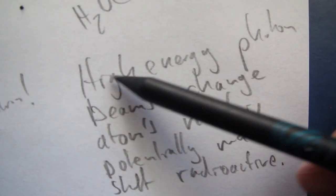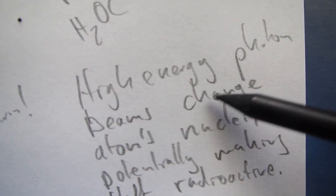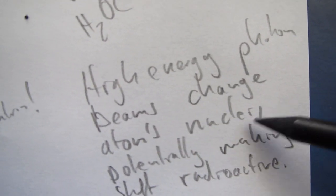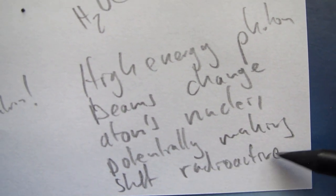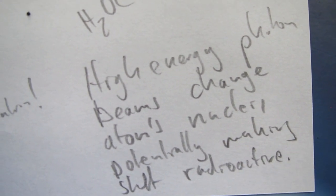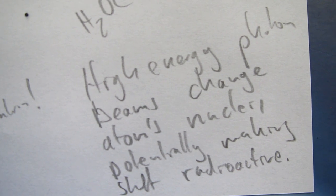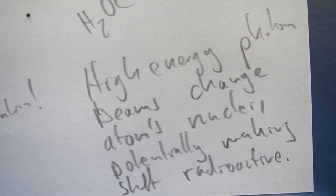So, the conclusion. High-energy photon beams change the atoms' nuclei by liberating protons and neutrons, potentially making stuff radioactive. So, that's the way you can see this damage, that's the way you can see these flashes. Now, let's have a closer look again.